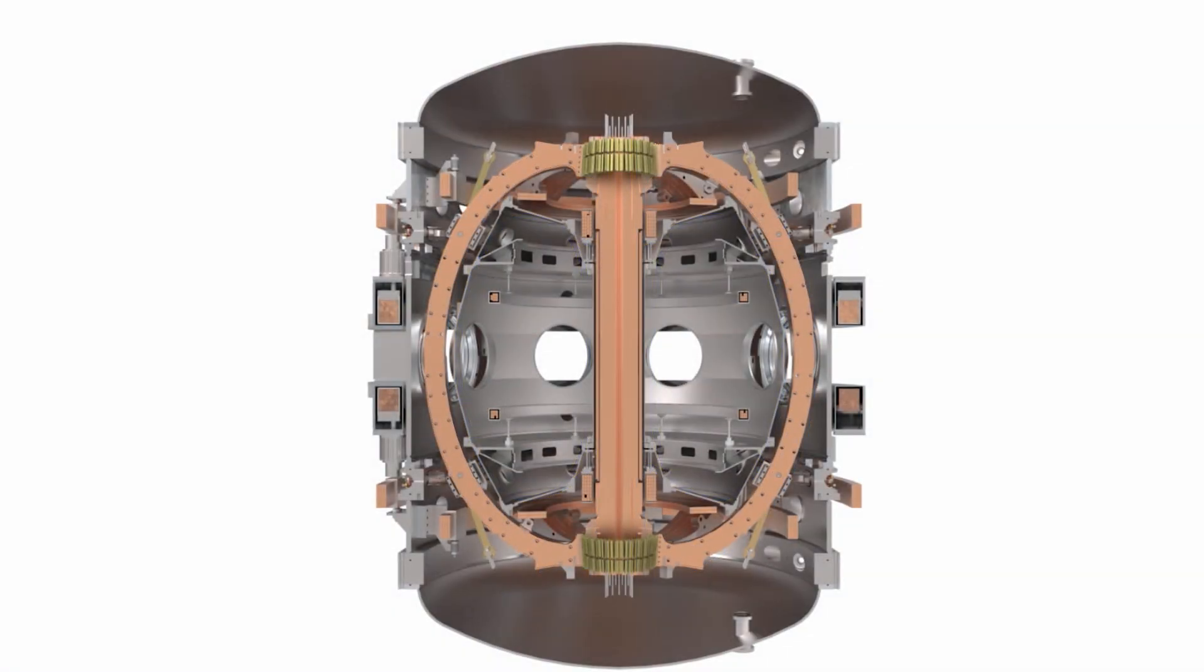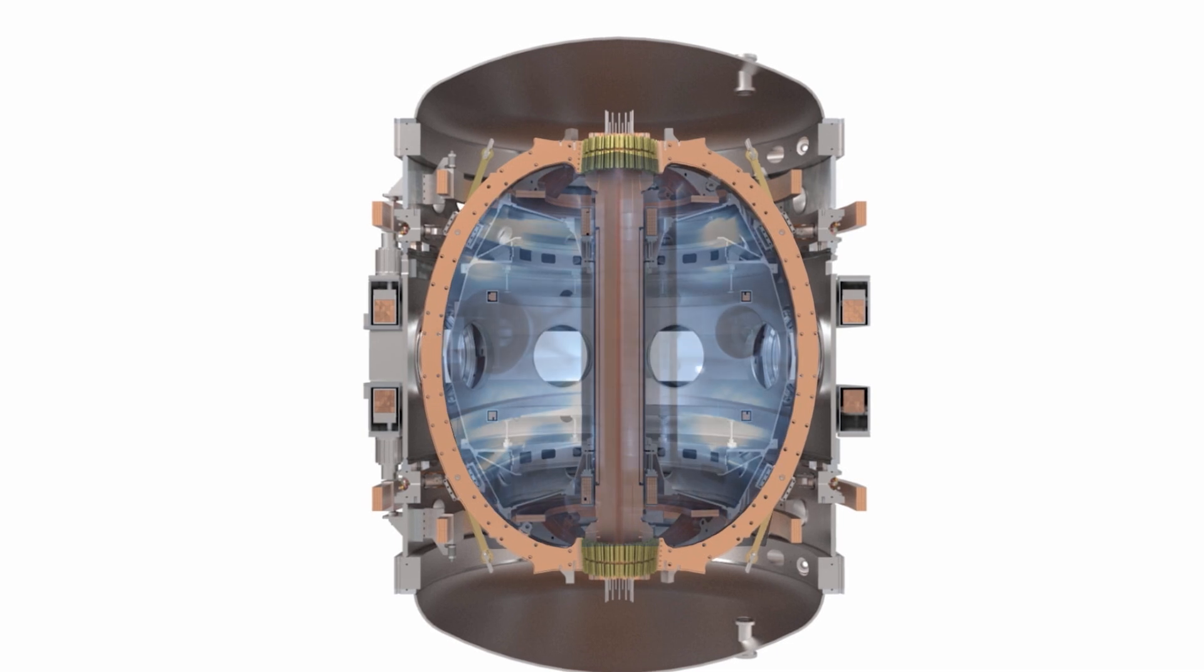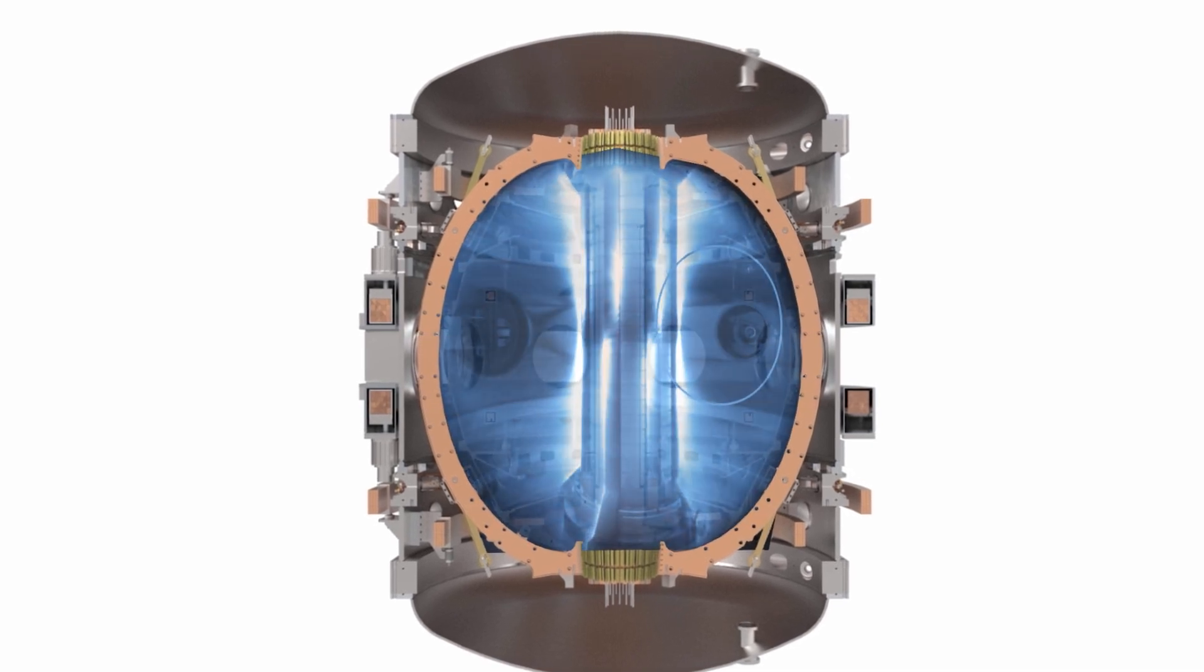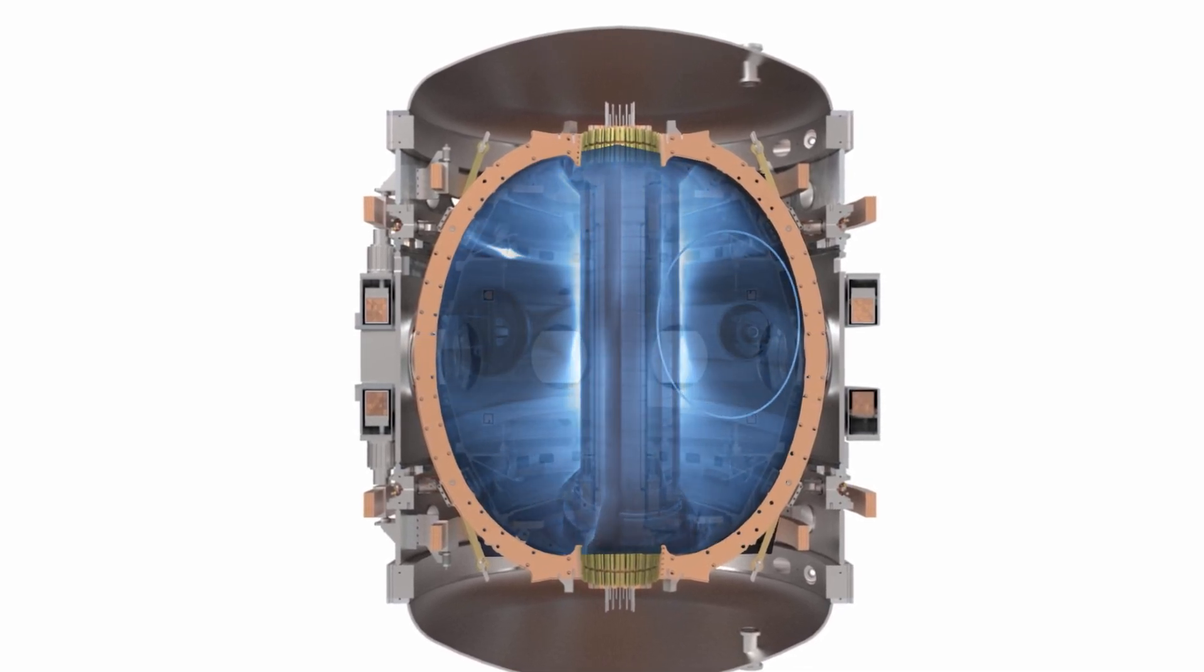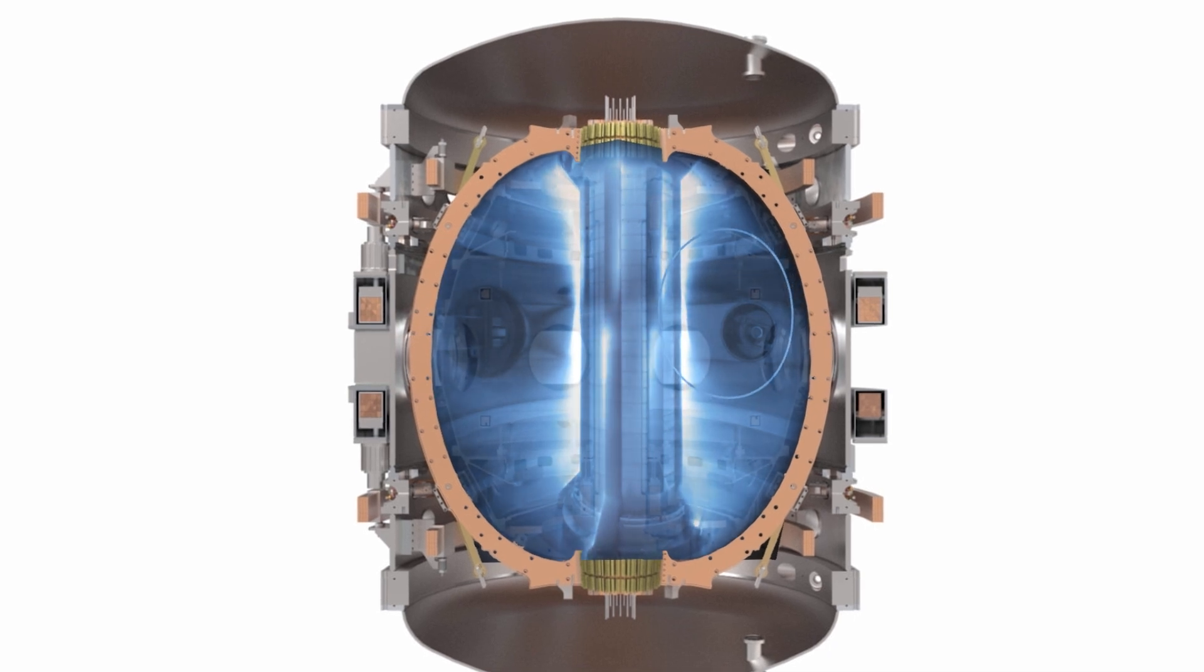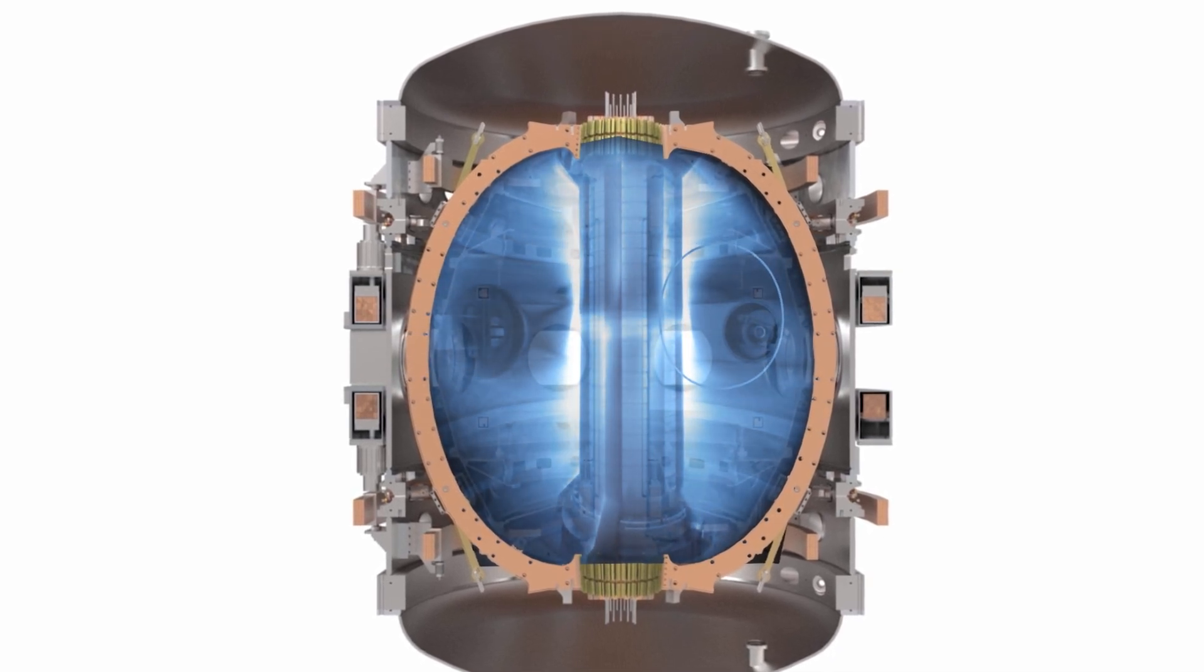In the tokamak, we heat the fuel to produce a plasma, a superheated gas in the fourth state of matter. We use strong magnetic fields to trap the plasma, and the aim is to hold it stable for long enough for fusion reactions to occur within the plasma.